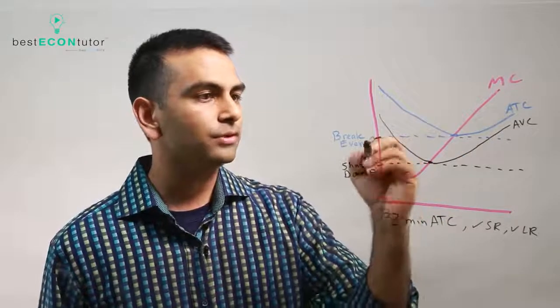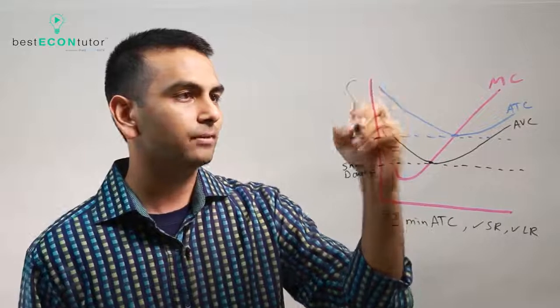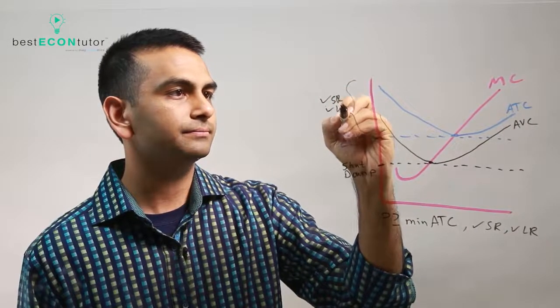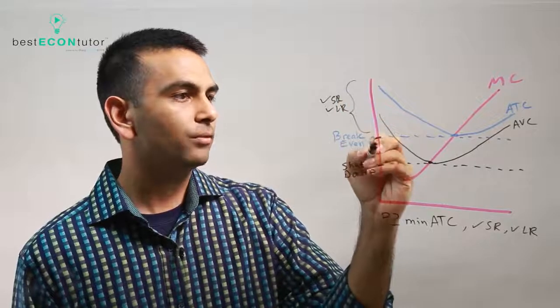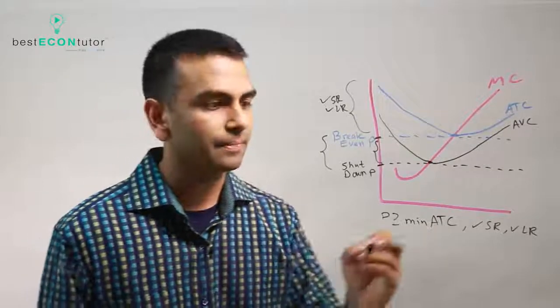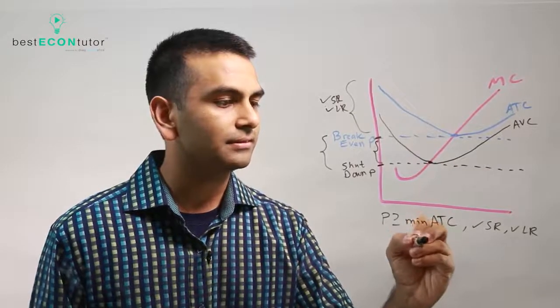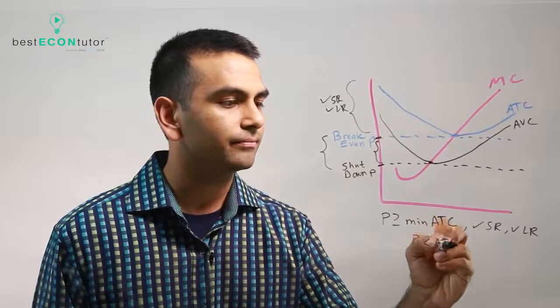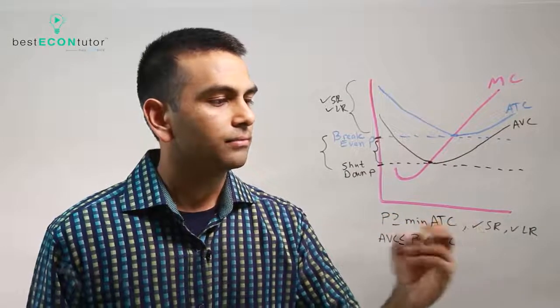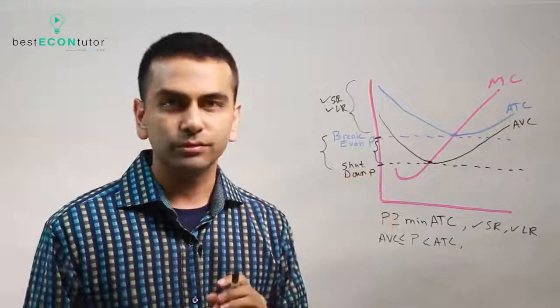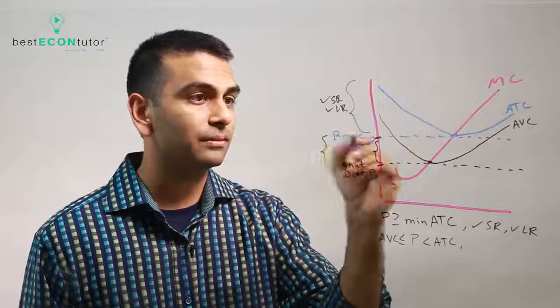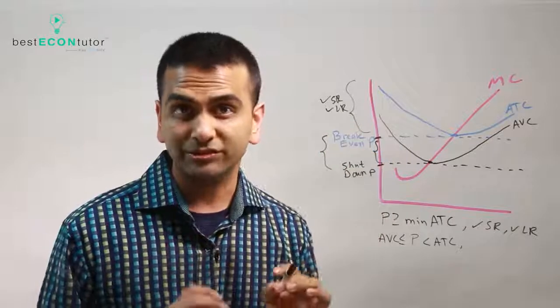But what if your price was in between these two? Here graphically, you're good for the short run and the long run. But if you're somewhere in the middle here, if price is in between the shutdown and break-even price, so really that's just like saying anytime P is less than your ATC but at least equal to your AVC. Well, here's the issue. You're making a loss for sure. In fact, anytime the price is less than the break-even price, you're making a loss.